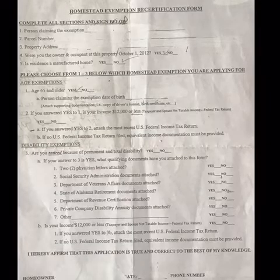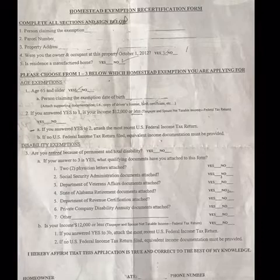The third program is the Homestead Exemption Re-Certification or Certification Program. You can apply if you are 65 years or older, you are disabled, and/or if your income is less than $12,000. You can also apply if the home is where you permanently live and not a rental or vacation home. You can pick up the form at your county courthouse.